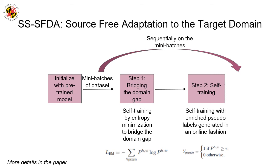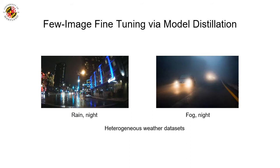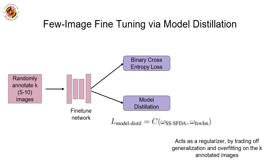Some heterogeneous weather datasets like RainCouver and Berkeley Deep Drive contain a mixture of adversities within the same image — for example, night and rain in RainCouver. Furthermore, these datasets are captured from different geographic conditions, meaning the source and target datasets may be from different regions. To make our model robust against such factors, we use ground truth labels for a few images — on the order of 5 to 10 images — from the target domain in a final refinement step. We empirically observe that directly fine-tuning the SSSFDA model on these images is suboptimal due to overfitting, so we propose a model distillation regularizer.